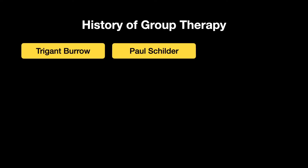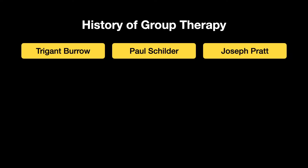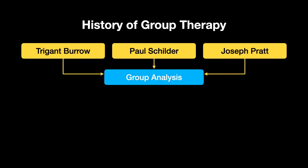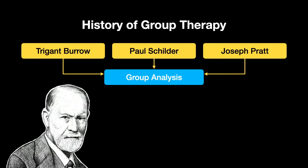We need to take a little journey down the history timeline and look at where group therapy came from. The first time we saw group therapy appear on the scene involved three individuals: Trigent Burrow, Paul Schilder, and Joseph Pratt. Each of them were psychoanalysts — we're talking about Freudian psychoanalysis.